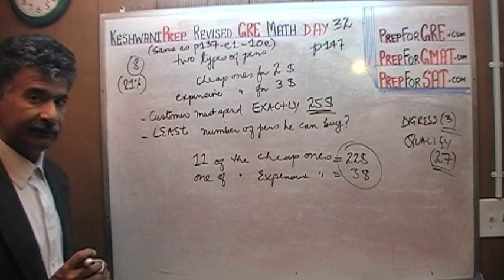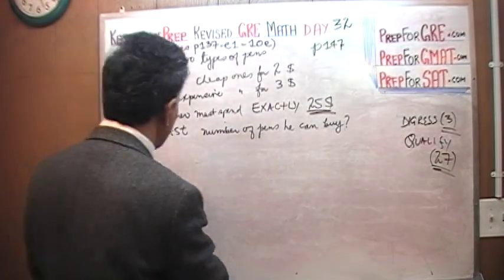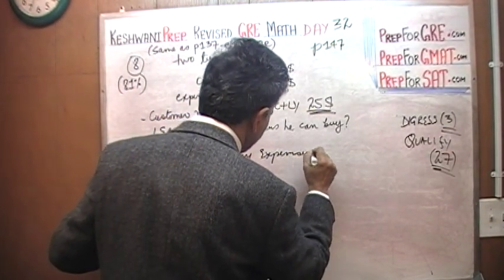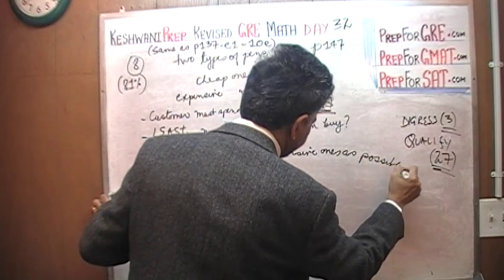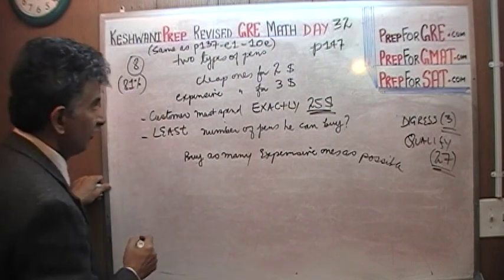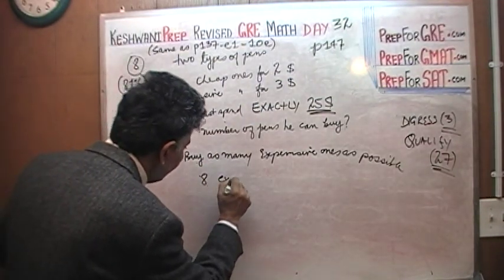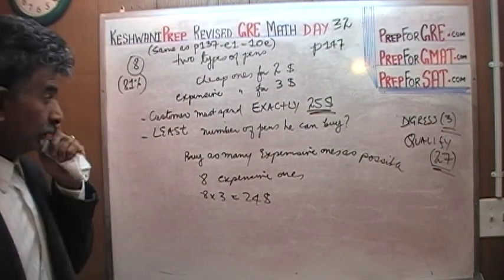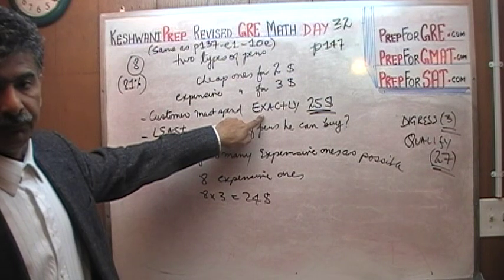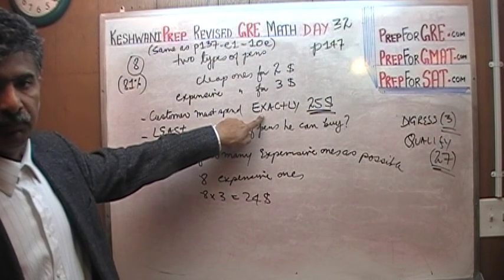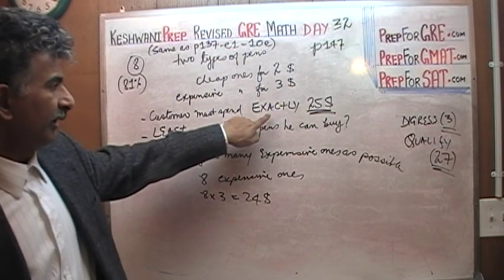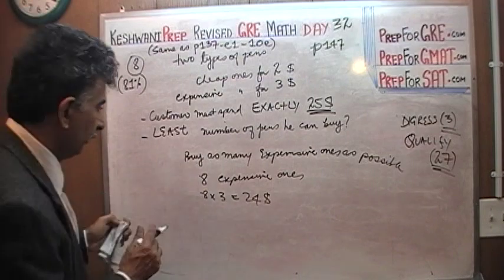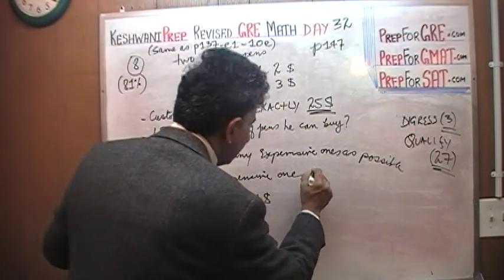Well, if you want to buy the least number, then what we want to do is to buy as many expensive ones as possible. Well, expensive ones are $3 each. So if you want to buy 8 expensive ones, 8 times 3 would be $24. That won't work. That won't work because we are asked to spend exactly $25. So if you were asked, what is the least number of pens can we buy in this scenario, given the fact that we have to spend exactly $25, what is the least number that we can buy? The answer will not change. The answer will still be 8, but the composition will change.